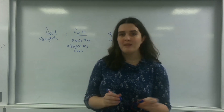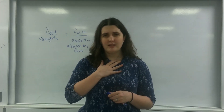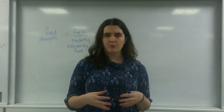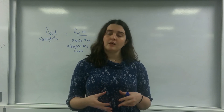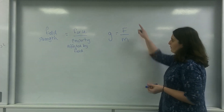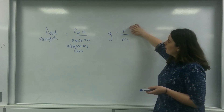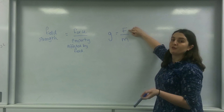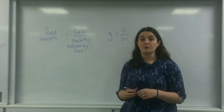So for example, if I'm in the Earth's field, that mass would be my mass. But because the Earth is in the Sun's field, if I was trying to work out the gravitational field strength from the Sun, the object that would be in the field would be the Earth. And the force of the object in a radial field is given by Newton's law of gravitation.